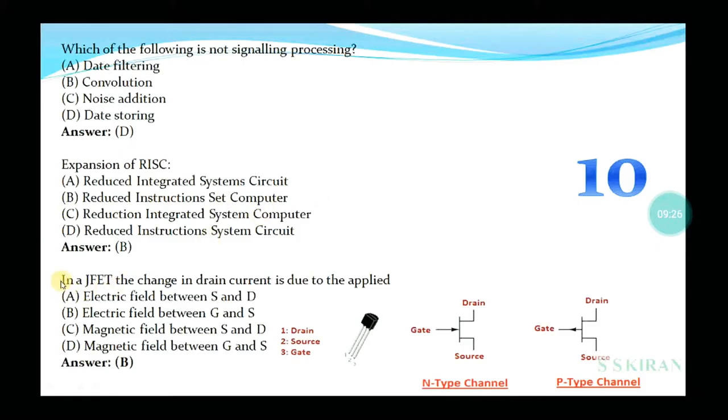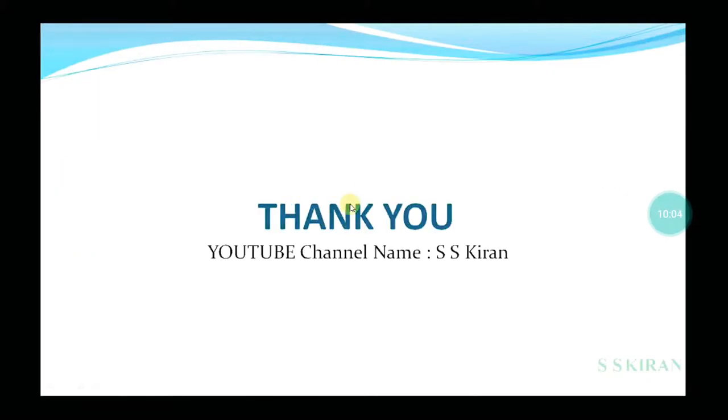In a JFET, the change in drain current is due to the applied electric field between S and D (source and drain)? No. Electric field between gate and source? Magnetic field between S and D? Magnetic field between G and S? Yes, option is electric field between gate and source. The next video I will discuss about the remaining questions, some multiple choice questions.